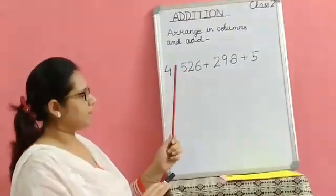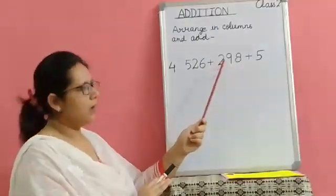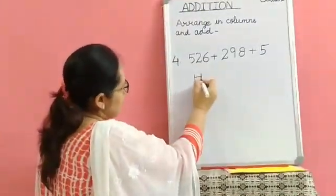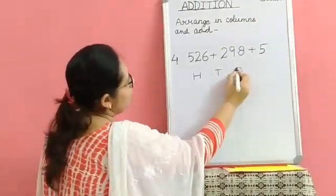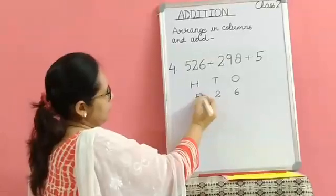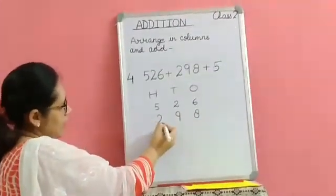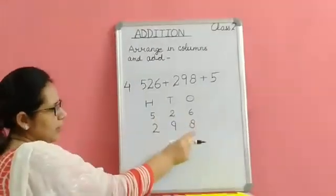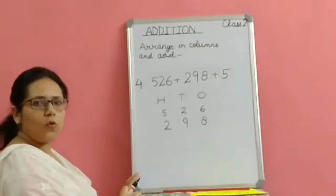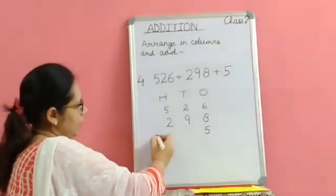Now moving on to the next sum. Children, one is a three-digit number, the second number is a three-digit number, and the last number is a single-digit number. So writing the columns: H for hundreds, T for tens, O for ones. Six in the ones column, two in the tens column, and five in the hundreds column. Eight in the ones column, nine in the tens column, and two in the hundreds column. Then five — where should I write five? In the ones column, in the tens column, or in the hundreds column? Children, when we have a single-digit number, there is no tens digit and there is no hundreds digit, so I will write five in the ones column. And we will add the numbers.